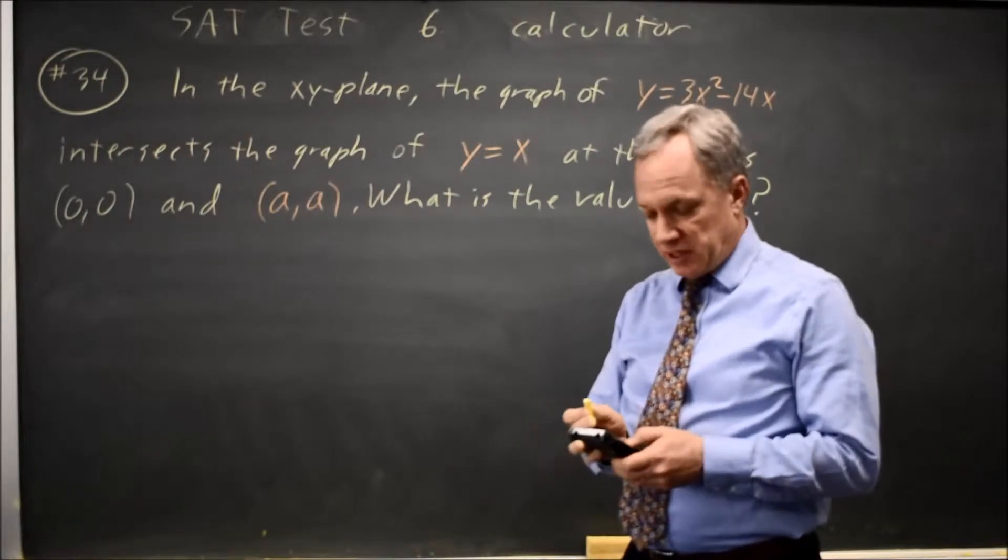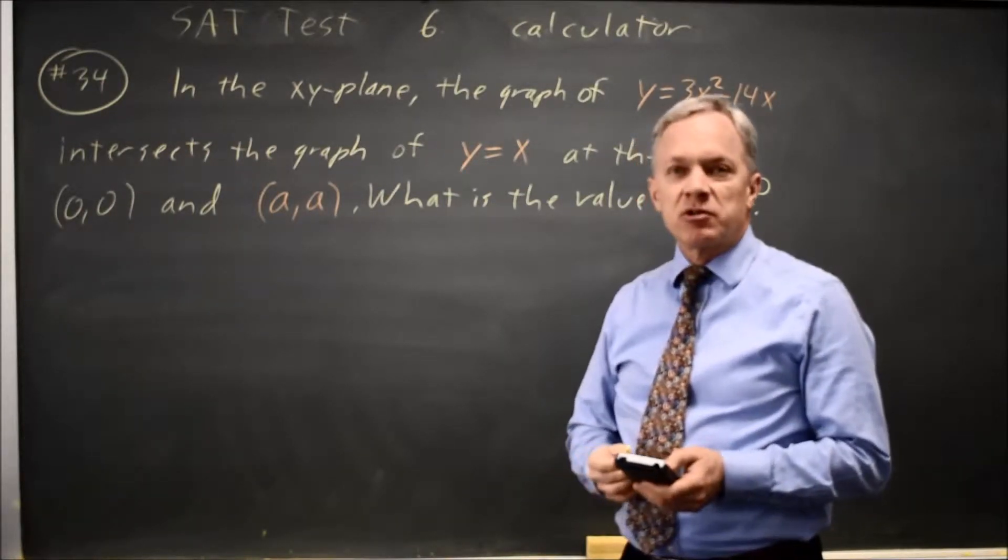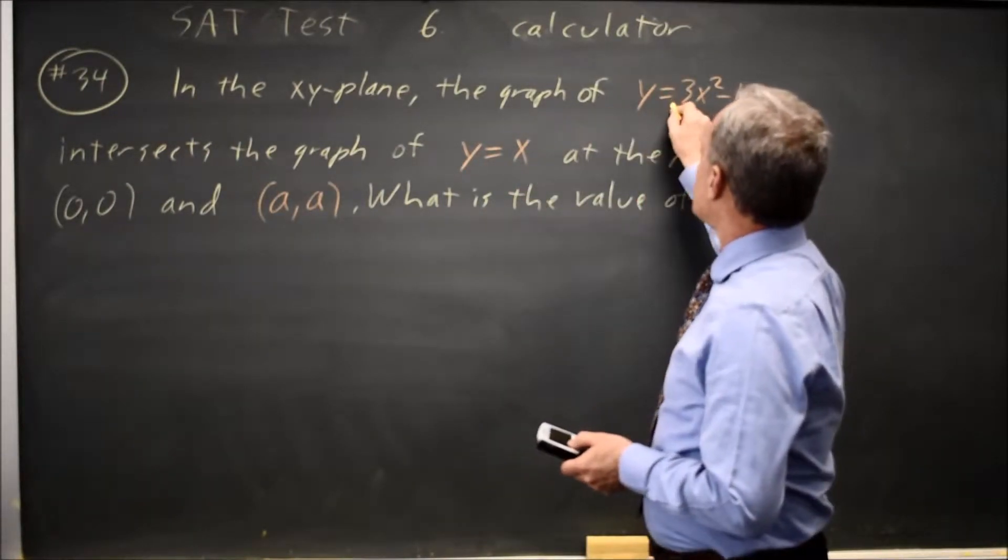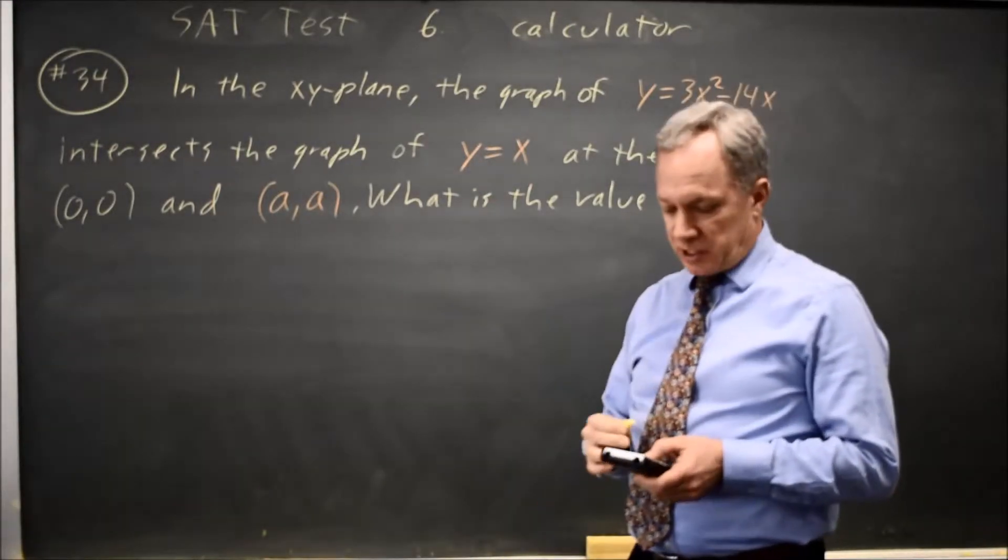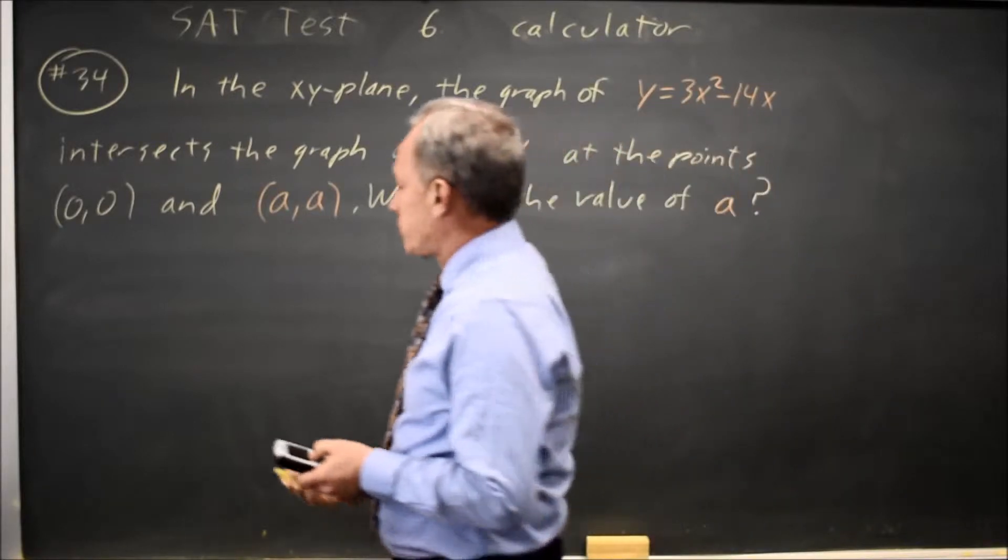Since this is a calculator question, the easiest option is to go to my graphing calculator, graph y equals 3x squared minus 14x in y1, graph y equals x in y2, and find the points of intersection.